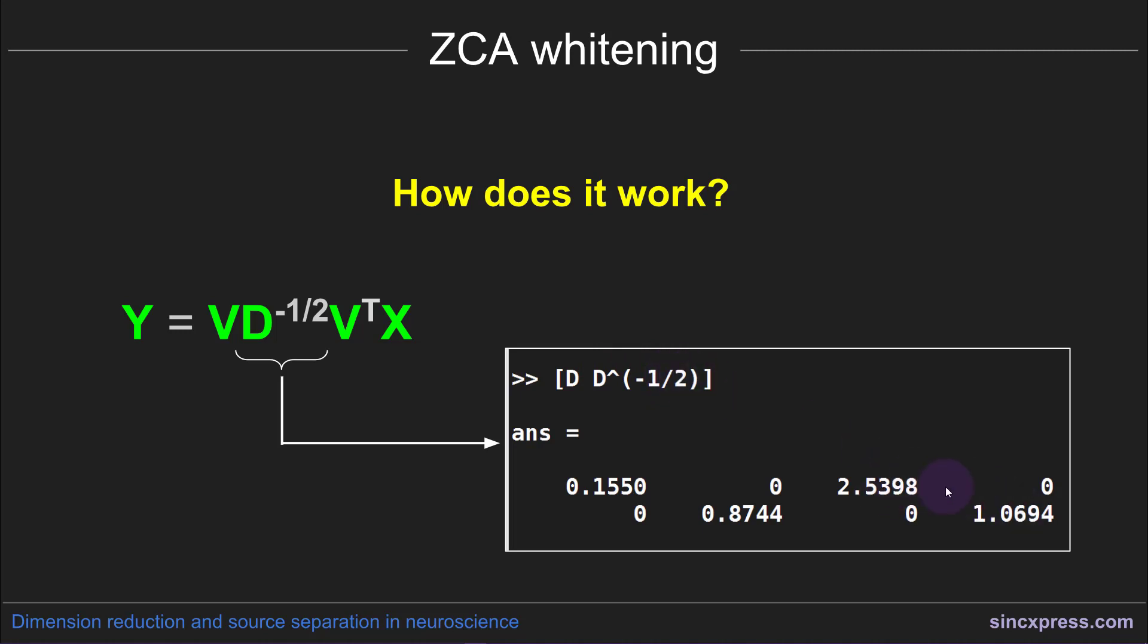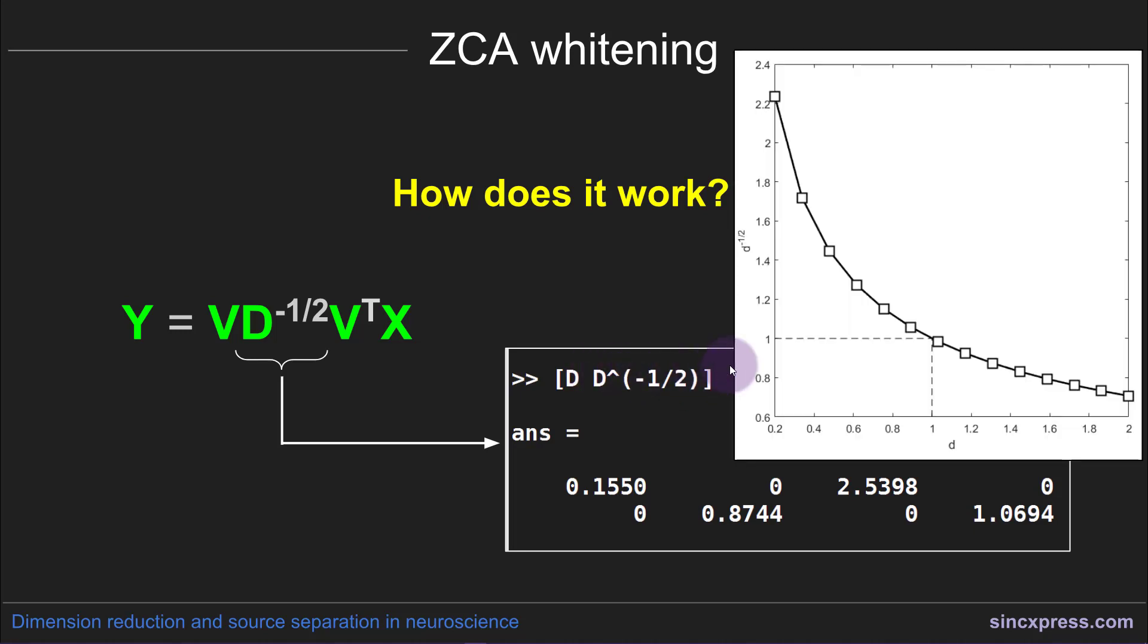And those elements look like this. So you can see this was the smaller eigenvalue, but now it became the larger value. And this one was larger initially, and now it gets only a little bit larger. And essentially what this negative square root in the exponent does is change the relationship or invert the relationship between the eigenvalues. So here I'm just plotting a range of values from 0.2 to 2. And this is their modulation. This is their transformation.